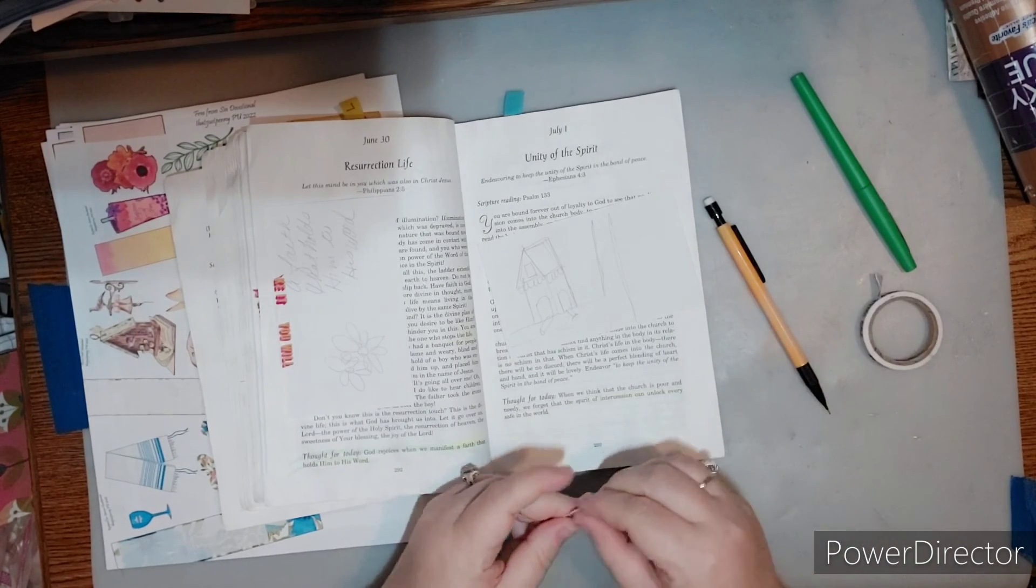If you need a copy of July the 1st, it's also located in my Facebook group. Unity of the Spirit. Endeavoring to keep the unity of the Spirit and the bond of peace. This is from Ephesians chapter 4, verse 3.